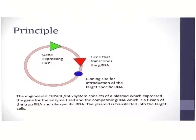The principle is that the Cas9 enzyme needs to be transformed into the host eukaryotic system. Cas9 is not present in eukaryotic cells — it has only been reported in bacterial cells. So when we transform the Cas9 into the eukaryotic system,